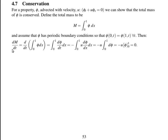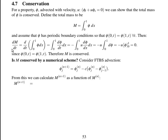Does the same thing hold for a numerical method? Let's consider the forward in time, backward in space advection scheme. So rather than having this continuous equation for phi, we now have a discrete equation, with phi at the new time step being equal to phi at the old time step, minus the Courant number times the spatial gradient of phi.